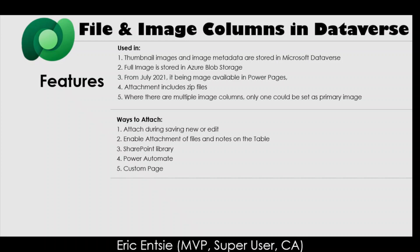There are various ways of attaching files. One is attaching during saving or editing data — when you create a new record or edit an existing one, you can attach a file. You can also enable attachment at the table level during table creation. You can also set up a SharePoint library and link it.